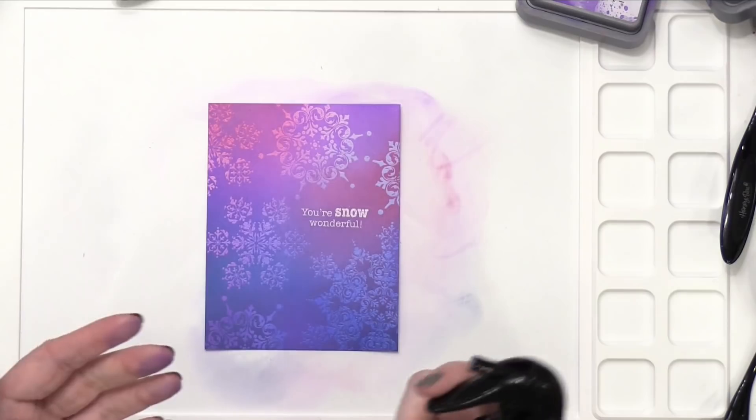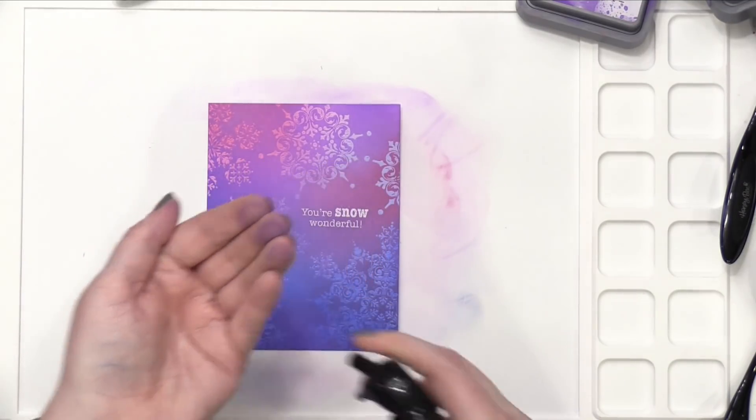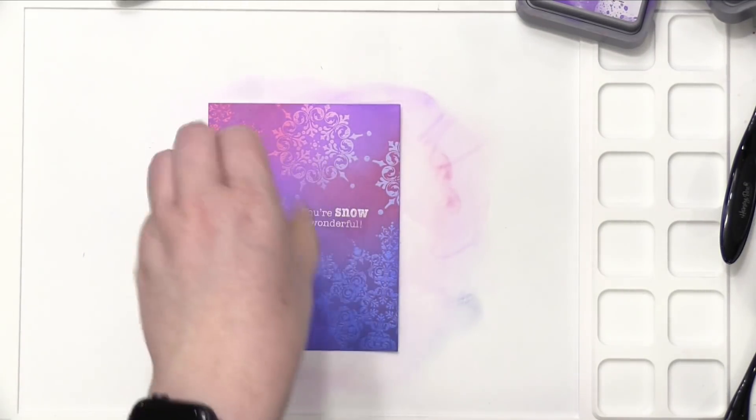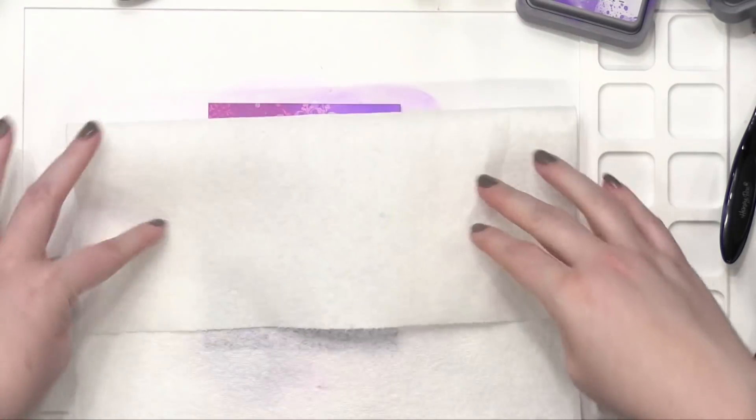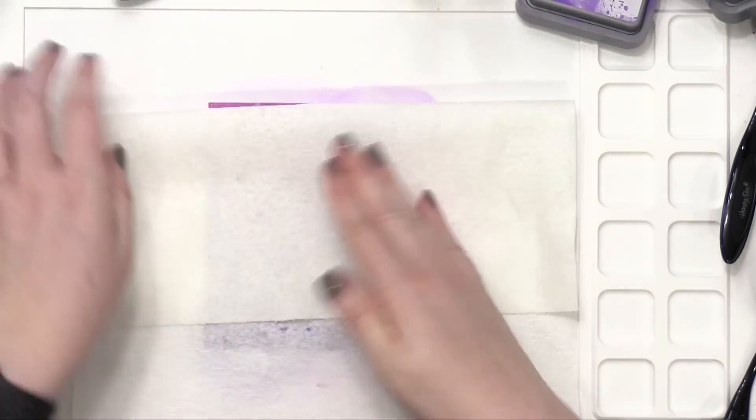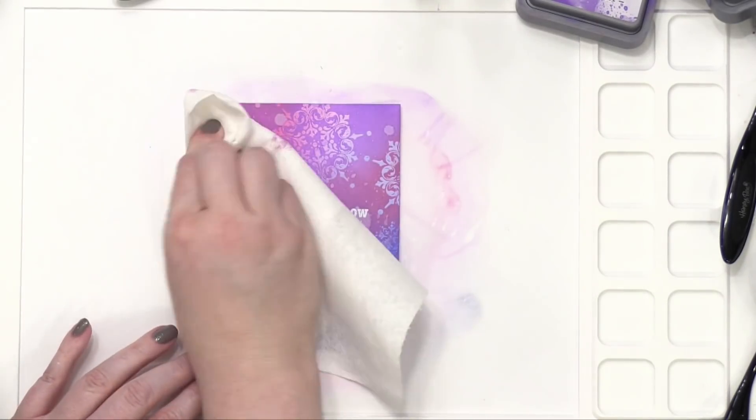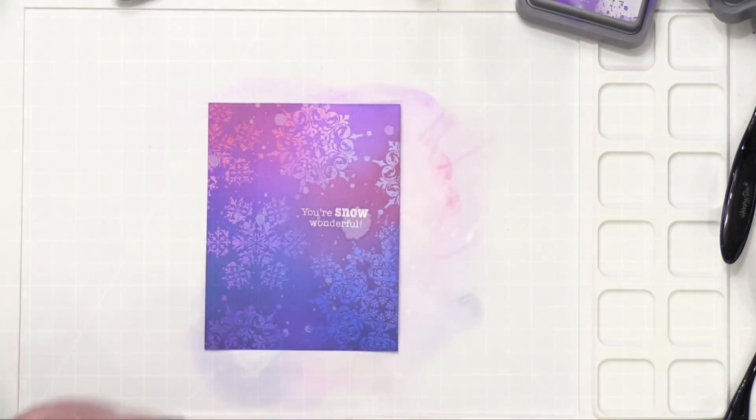Okay so now I have all of my ink blending done. I decided to take a distress sprayer and spray some water in the palm of my hand and flick the water on top. This is going to give it even more of a kind of snow flurry look, gives it a little bit more of a wet feel.